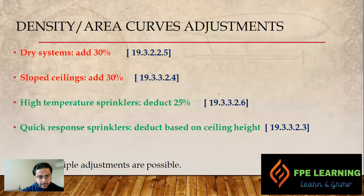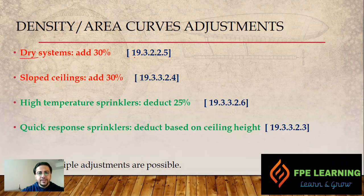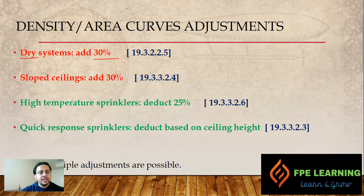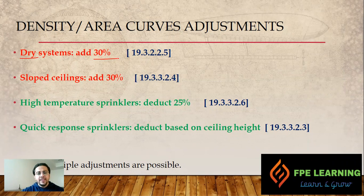The first scenario: if we have a dry system, as per NFPA 13 Section 19.3.2.5, we have to add 30 percent extra. In a dry system, above the dry valve we have air or nitrogen, and below we have water. To open the valve, air must be released first, which only happens when the fire's heat activates the sprinkler, releasing the air before water can enter the pipe above the dry valve.